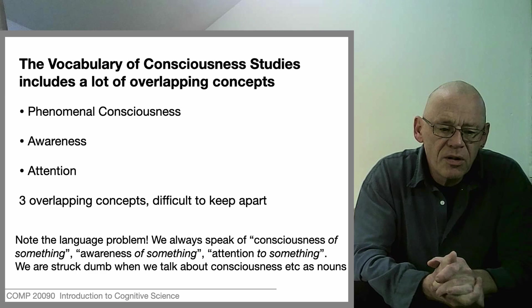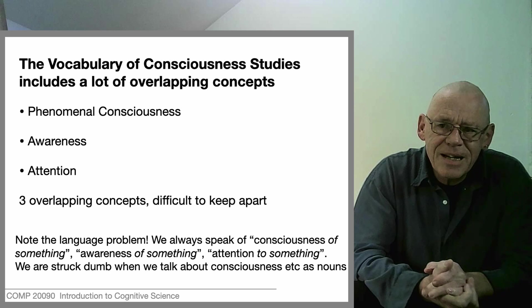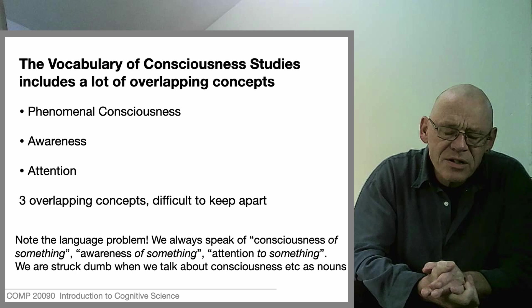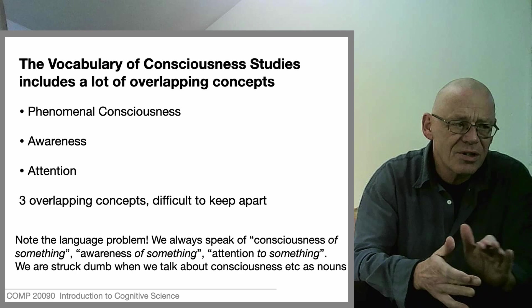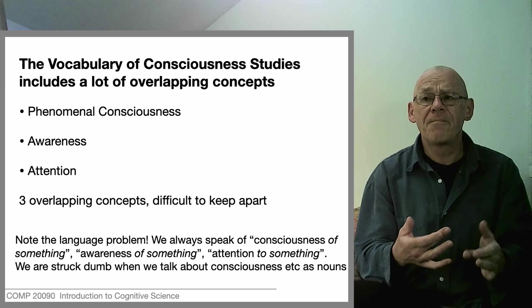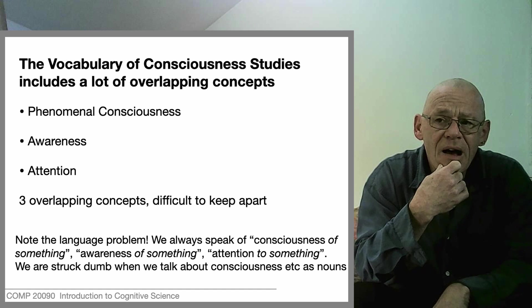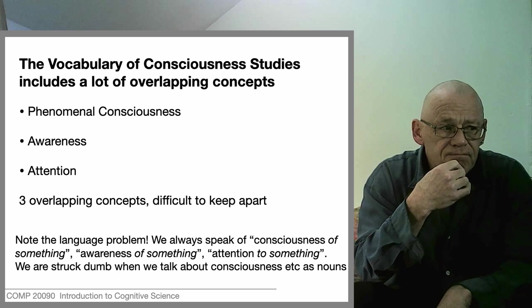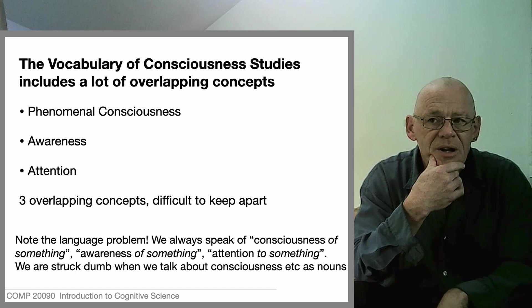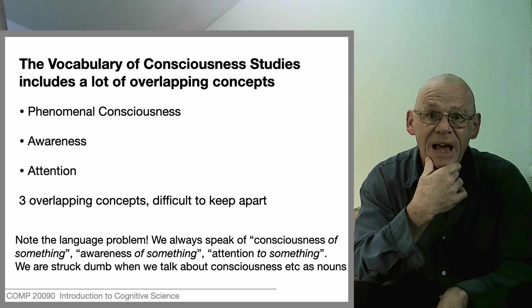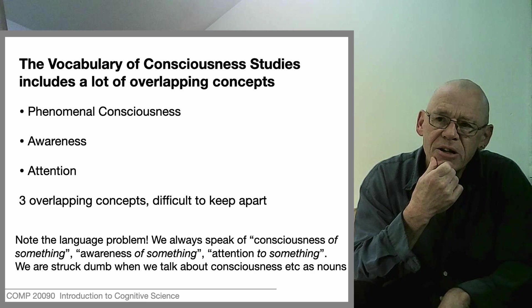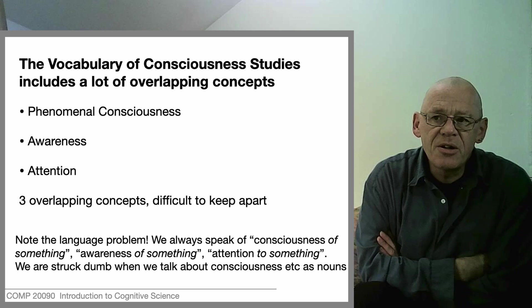As we've discussed consciousness in the last few videos, there's been a number of things mixing together. Different kinds of ways of thinking about ourselves encourage us to use words one way or another. So we've met phenomenal consciousness, or the 'what it is likeness' of qualia, but we've also talked about things like the spotlight of attention, the theater model, the global workspace model, and the terms awareness and attention — these concepts kind of get muddled up sometimes, notoriously so in our psychological theorizing.